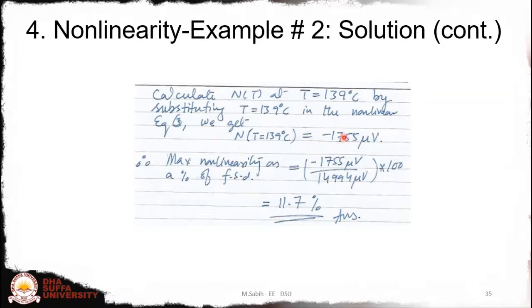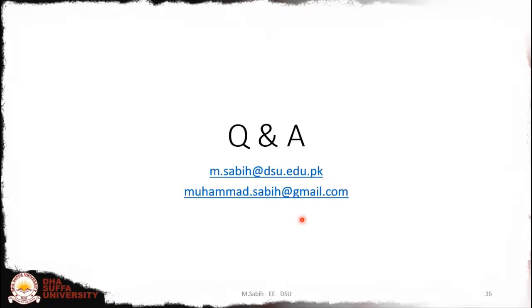Substituting T = 139°C back into the nonlinearity equation gives n(139) = −1755 µV. Dividing by the full-scale deflection and expressing as a percentage, the maximum nonlinearity as a percentage of full-scale deflection is 11.7%.